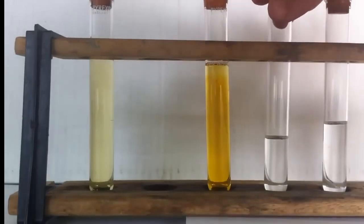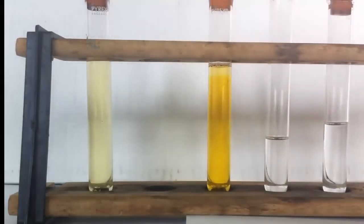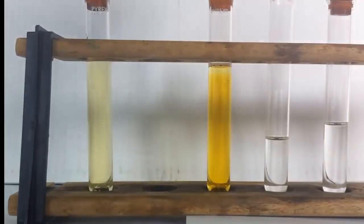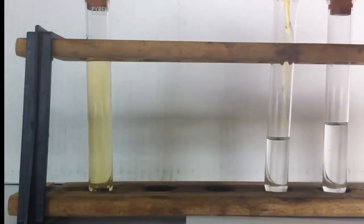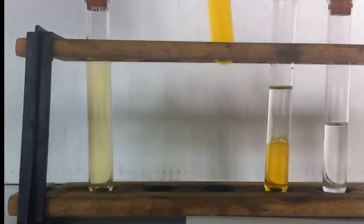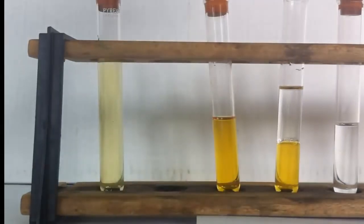So I'll remove the bung here from the test tube containing the cyclohexene and add roughly the same volume of bromine water. In it goes. Put the stopper on here.